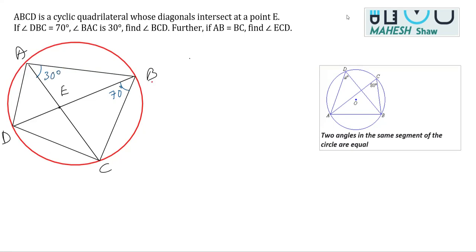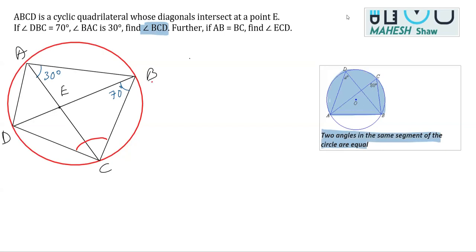In the first part, we need to determine angle BCD. We use the property that two angles on the same segment are equal. As you can see, this angle and the other angle are on the same segment, subtended by arc BC. So using the angle in the same segment theorem, I can write this angle as 30 degrees.